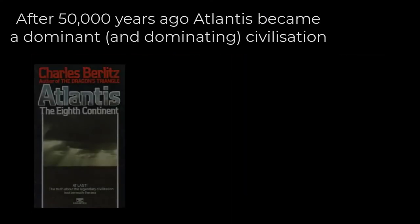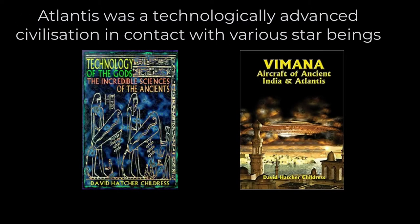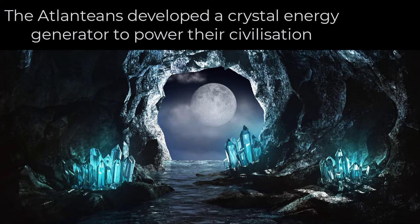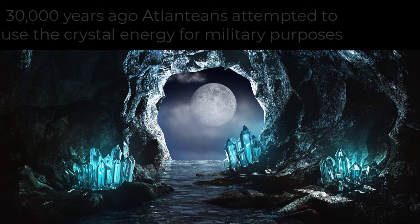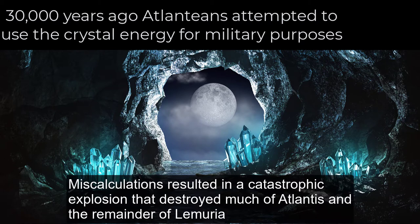After 50,000 years ago, Atlantis became a dominant and dominating civilization — technologically advanced and in contact with various star beings. Atlanteans were a mix of Pleiadian, Orion and Draco genetics and culture. They developed a crystal energy generator to power their civilization. Some Atlanteans traded this crystal technology for Orion military equipment. 30,000 years ago, Atlanteans attempted to use the crystal energy for military purposes. Miscalculations resulted in a catastrophic explosion that destroyed much of Atlantis and the remainder of Lemuria.